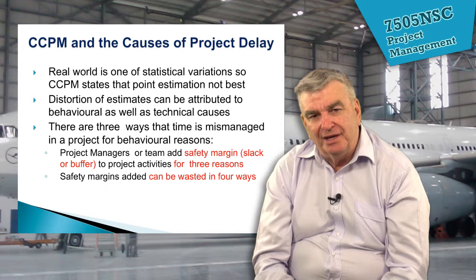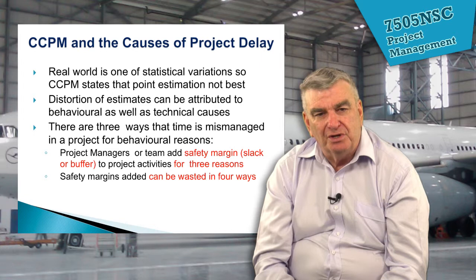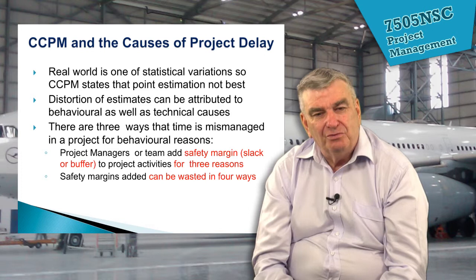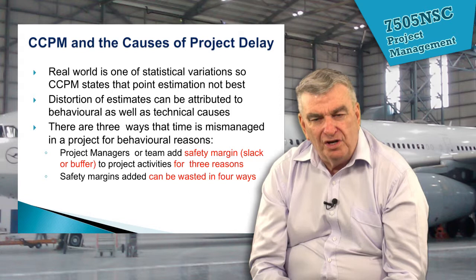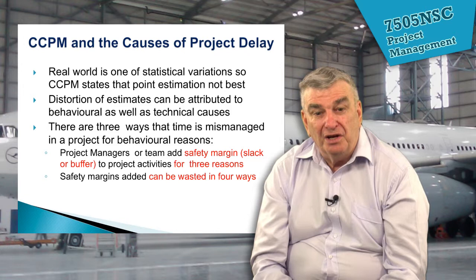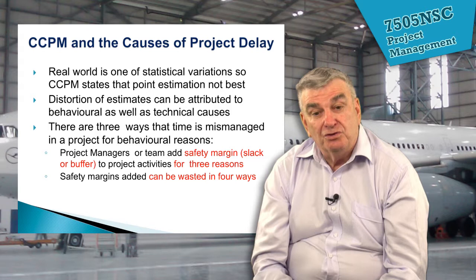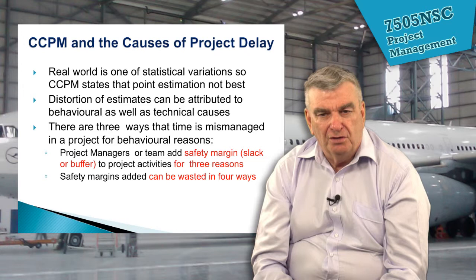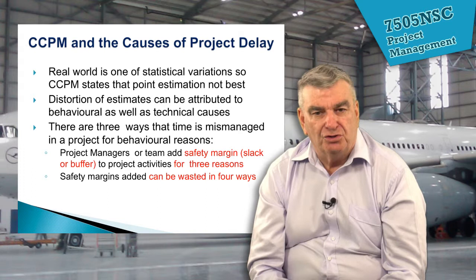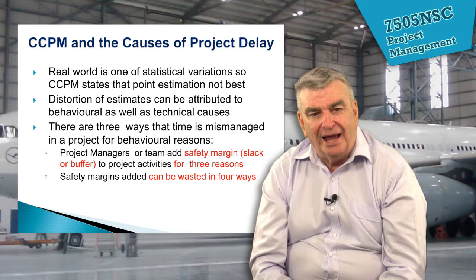Estimates can be distorted for behavioural as well as technical reasons — people often make changes to estimates for reasons that are hard to explain. There are three reasons time is mismanaged on projects. The first is that project managers or team members often add a safety margin into their estimates. For example, a team member might say it will take 10 days but makes it 12 to be safe; the project manager then adds another day, so 10 becomes 13. There are different reasons people mismanage their estimates.